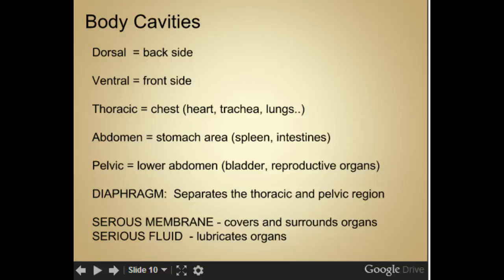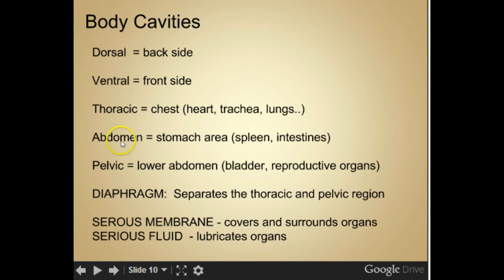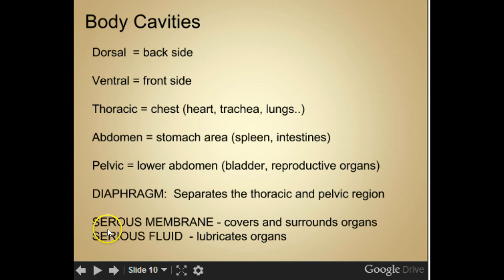Body cavities. Dorsal refers to the back side and ventral refers to the front side. The thoracic cavity is the chest area, where the heart, trachea, and lungs are. The abdominal cavity is just below the chest — the stomach area — where you'll find the spleen and intestines. The pelvic area is the lower abdomen, where you'll find the bladder and reproductive organs. A diaphragm separates the thoracic and pelvic regions. The serous membrane covers and surrounds organs, and serous fluid lubricates them.